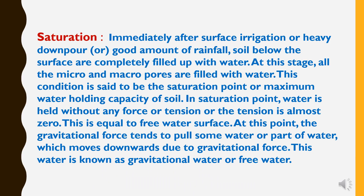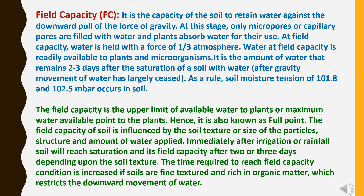Among soil moisture constraints, first we will study about saturation. Immediately after surface irrigation, heavy downpour, or a good amount of rainfall, soil below the surface is completely filled with water. At this stage, all the micro and macro pores are filled with water. This condition is called the saturation point or maximum water holding capacity of soil. At saturation, water is held without any force or tension — the tension is almost zero — equal to free water surface. At this point, gravitational force tends to pull some water downward, known as gravitational water or free water.